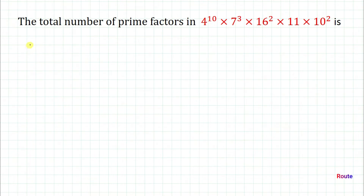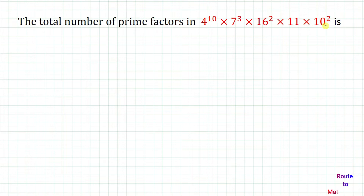The given question is: the total number of prime factors in 4 to the power 10, multiplied with 7 to the power 3, multiplied with 16 to the power 2, multiplied with 11, multiplied with 10 to the power 2. We need to find out the number of prime factors present in this complete number.